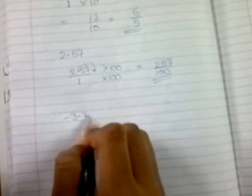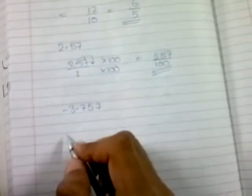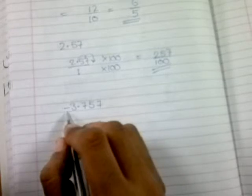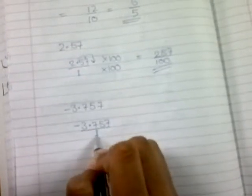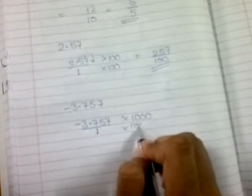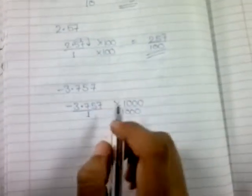Let's move to another example: -3.757. To convert this to fractional form, first write it as -3.757 divided by 1. Now shift this point three decimal places to the right, which means you multiply by 1000. You also have to multiply the denominator by 1000.